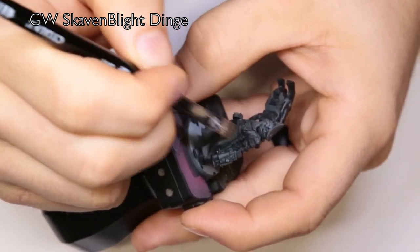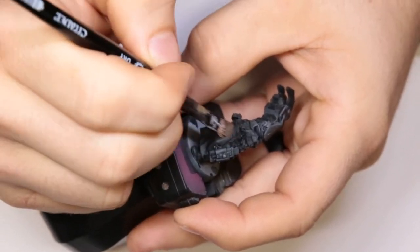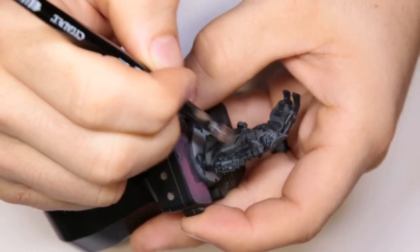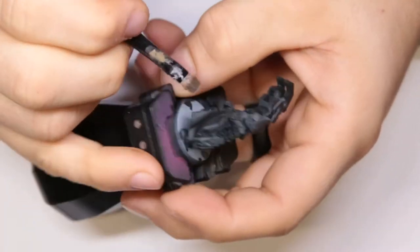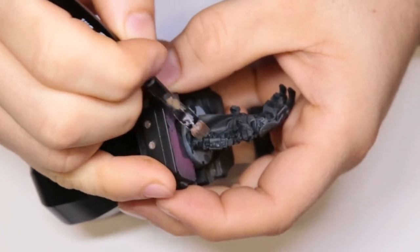Here we're coming through with Skavenblight Dinge. I actually did a couple passes with a dry brush just because I didn't want it to be too streaky, too in your face. So we did a couple passes with a dry, dry, dry brush, light brush pressure, just trying to get it to build subtly.